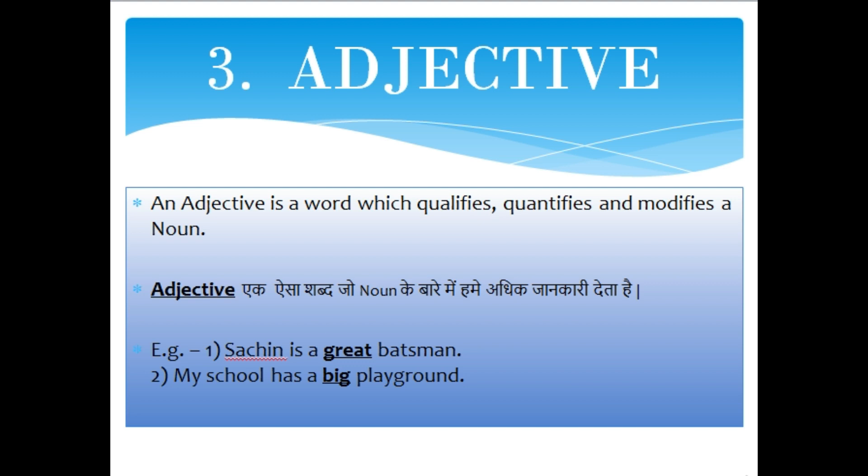Our next part of speech is adjective. An adjective is a word which qualifies, quantifies and modifies a noun. Adjective एक ऐसा शब्द है जो noun के बारे में हमें अधिक जानकारी देता है. For example, Sachin is a great batsman. The word 'great' qualifies the noun Sachin, so it is called an adjective. My school has a big playground. 'Big' is the quality of the playground — it qualifies the noun playground. That's why in this sentence, big is an adjective.